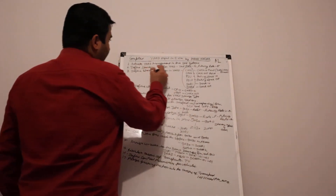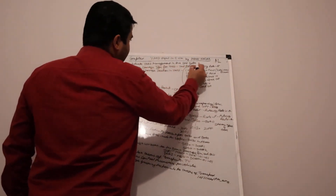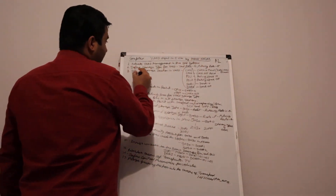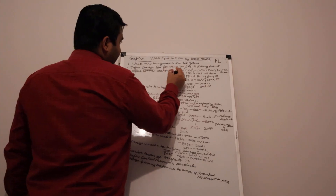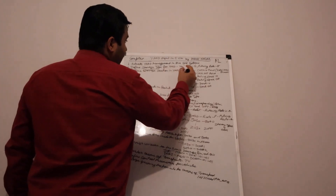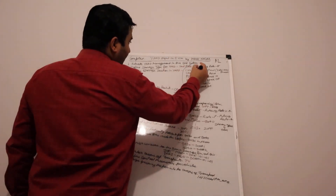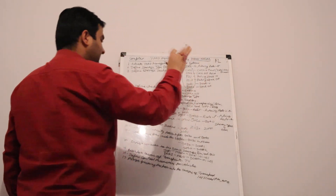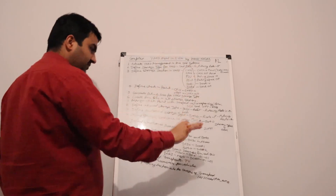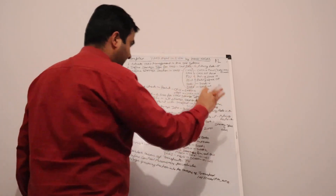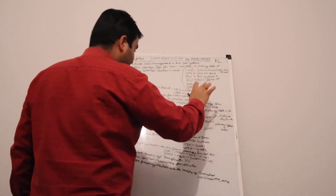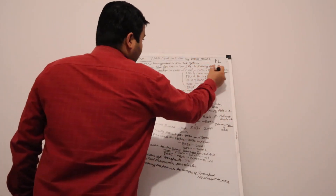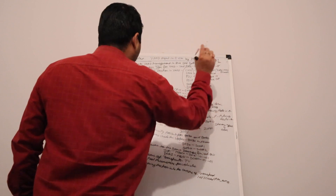First, we need to activate yard management in the SAP system. Then we need to define a storage type for the yard. The storage type role is Z — when we take storage type role Z, the system understands this storage type is specific for yard. We perform step five with this role.